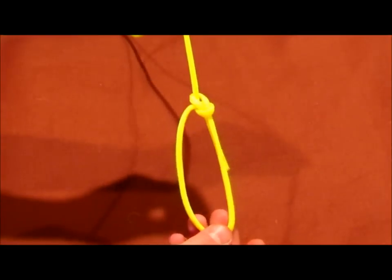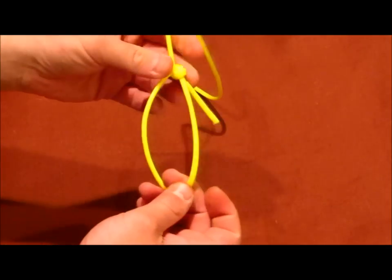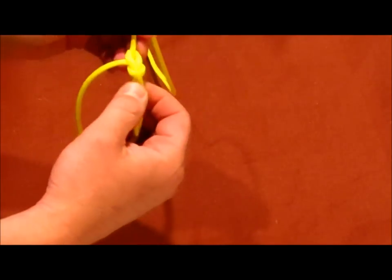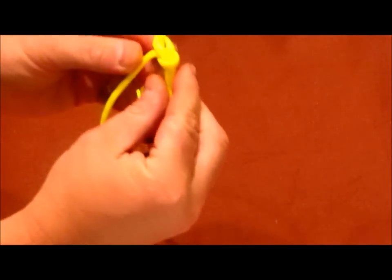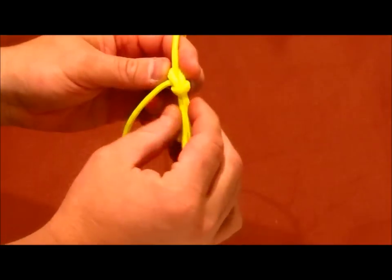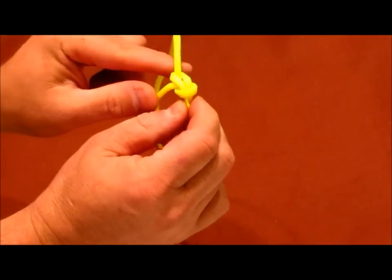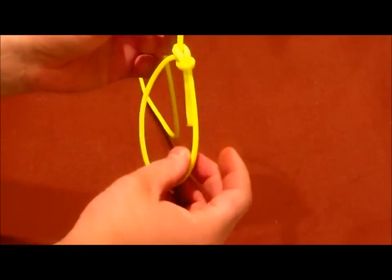And that forms the bowline. Pretty simple knot. If it looks like that, or it's side by side, you can see these two ropes are side by side, and it just kind of forms over the top of this. You've got a good bowline.